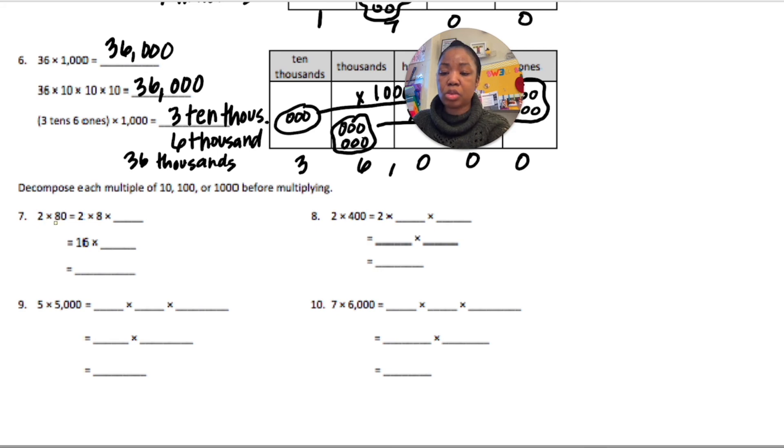So, for 7, we're doing 2 times 80. That 80 is times 10, right? I'm looking for the zero, right? 80 is 8 times 10. So, 2 times 80 is 2 times 8 times 10. I can multiply 2 times 8. That's how they got that 16.